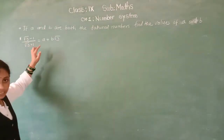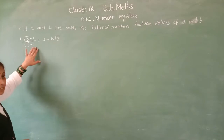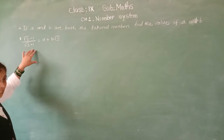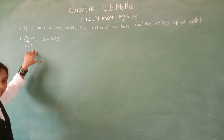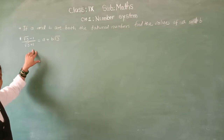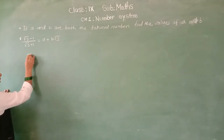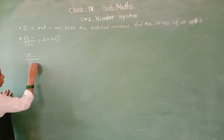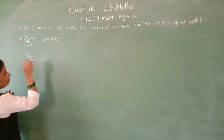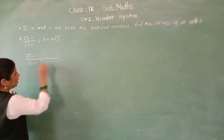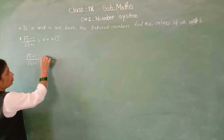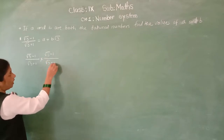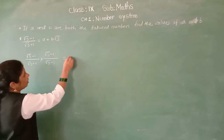So here root 3 minus 1 upon root 3 plus 1 — on this side, what is the rationalization factor? Root 3 minus 1. So here root 3 minus 1 upon root 3 plus 1, multiplied by the rationalization factor root 3 minus 1. We have to multiply both the numerator and denominator by root 3 minus 1, and here it equals A plus B root 3.